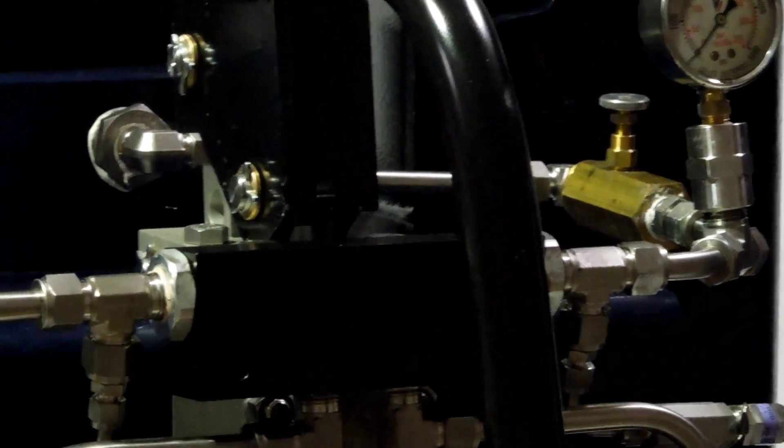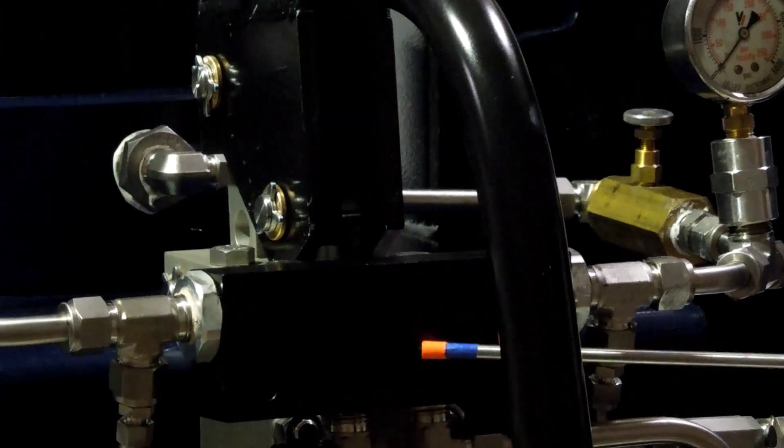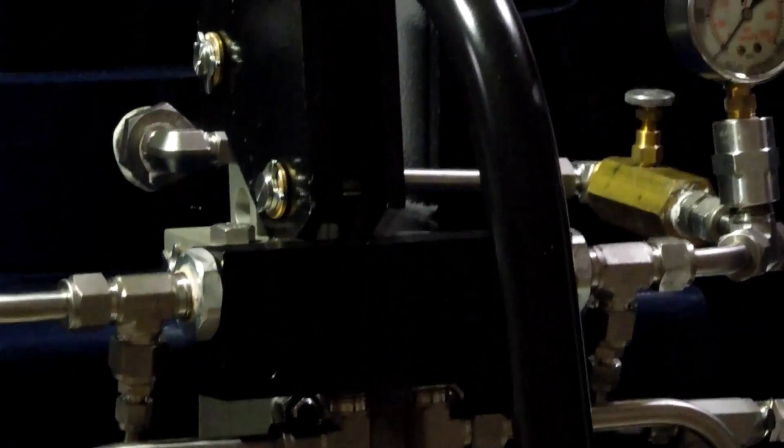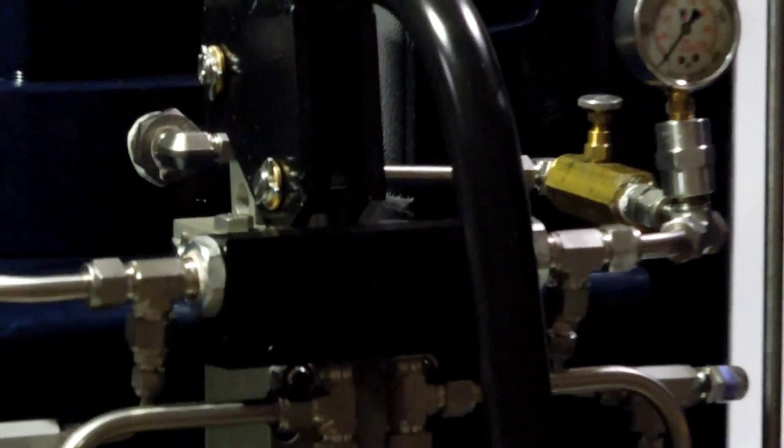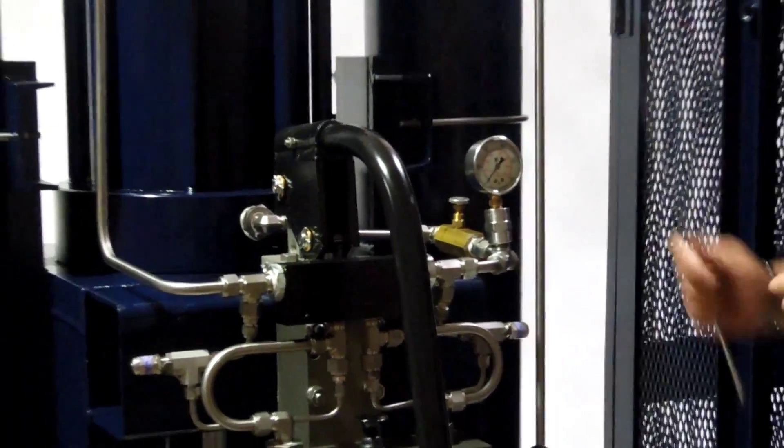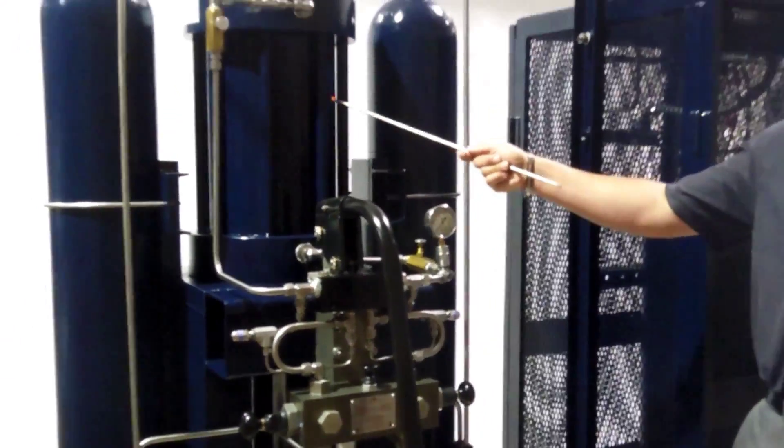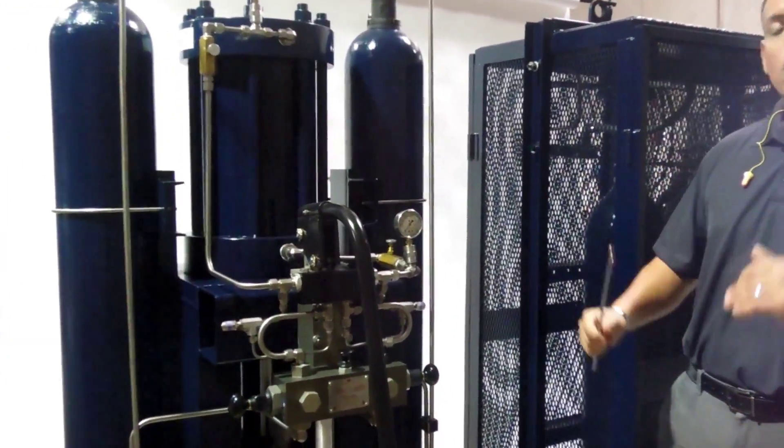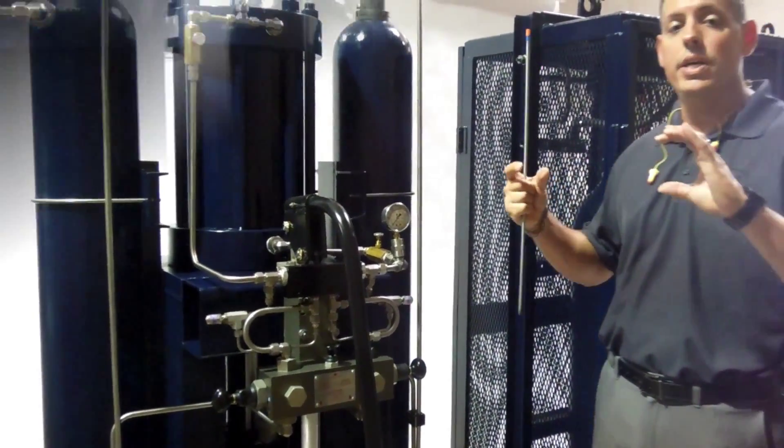Another feature that our gas over oil actuators come with is a double holding valve. At any time that you have loss of power, that double holding valve is going to be able to lock that cylinder into place and lock the valve into place. So it's not going to fail open or fail closed, it's actually going to fail in place.